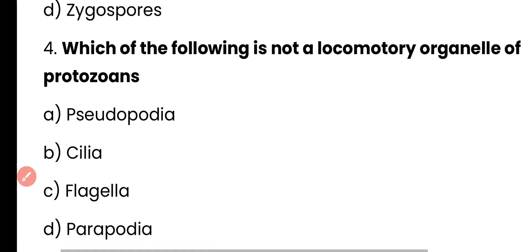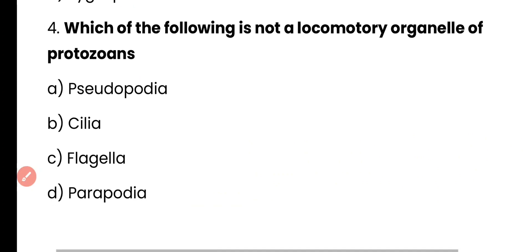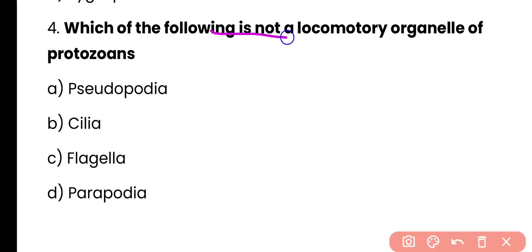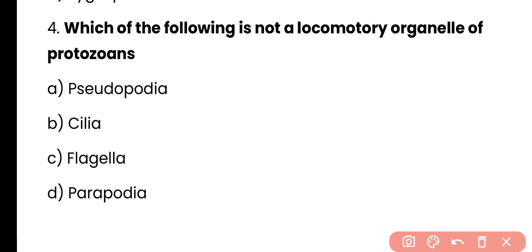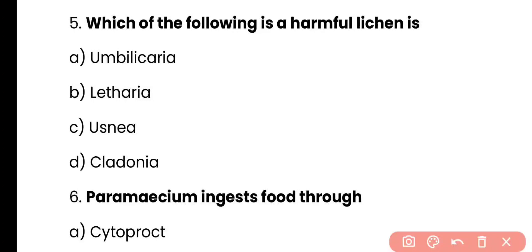Question number 4. Which of the following is not a locomotory organ of protozoan? Pseudopodia, cilia, flagella, or parapodia? Correct answer is option D. Parapodia are not a locomotory organ of protozoan, while the remaining — pseudopodia, cilia, as well as flagella — are the means of locomotion in different protozoans.